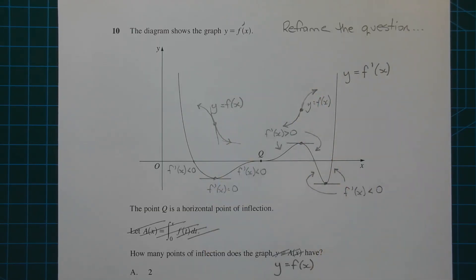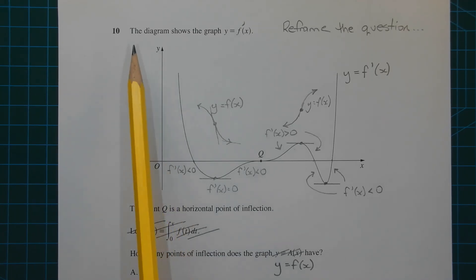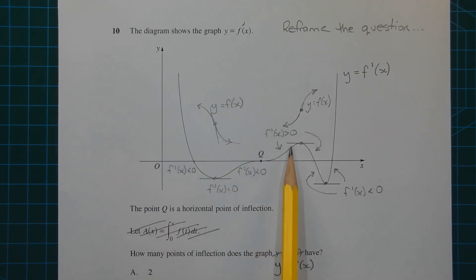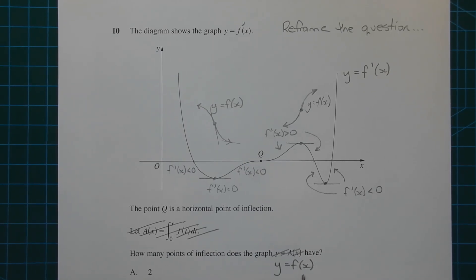Let's reframe the question so we are not making direct reference to the integral. In other words, let's make it in terms of f of x and f dash of x rather than f of x and the integral of f of x. The diagram shows the graph y equals f dash of x. The point q is a horizontal point of inflection. How many points of inflection does the graph y equals f of x have?